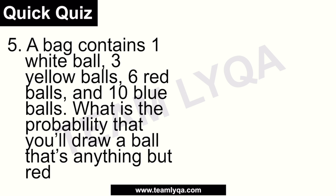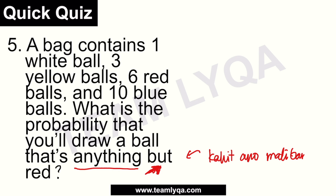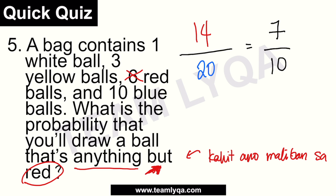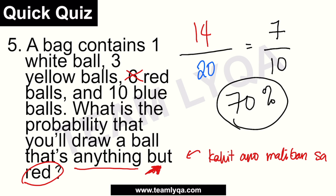Number five — this one sounds fancy but it's the same concept. What is the probability that you'll draw a ball that is anything but red? 'Anything but' means anything except red — only red is excluded. Our red balls total six, so we don't want those. We're fine with white (one), yellow (three), and blue (ten): one plus three plus ten equals fourteen. So fourteen over twenty, which simplifies to seven over ten, or seventy percent.